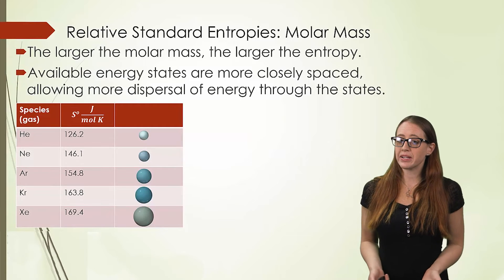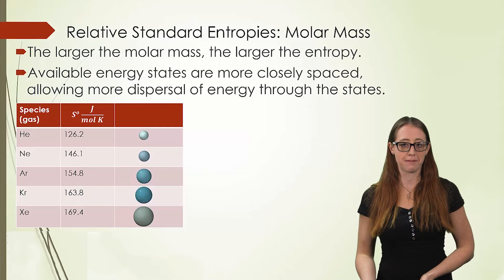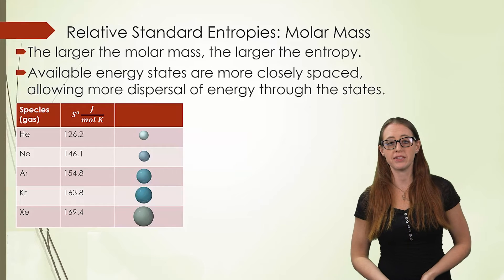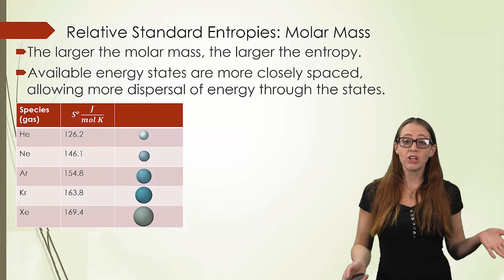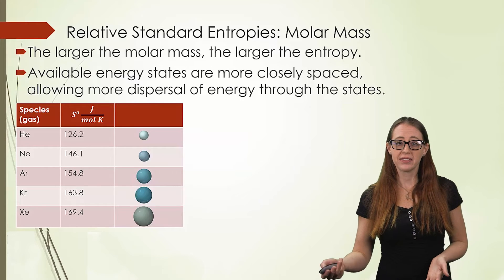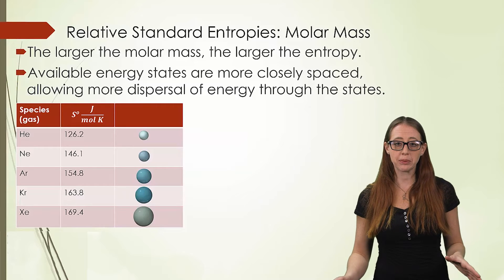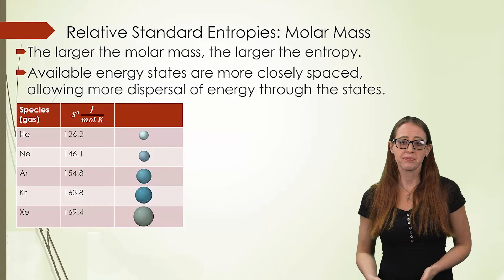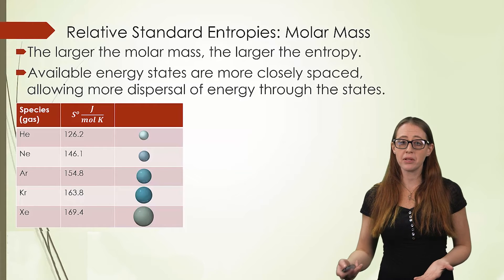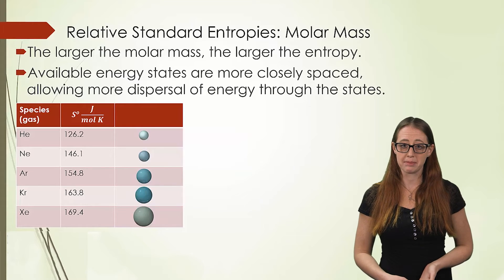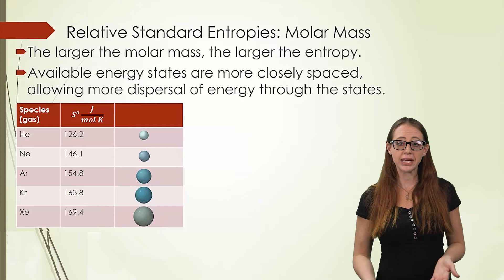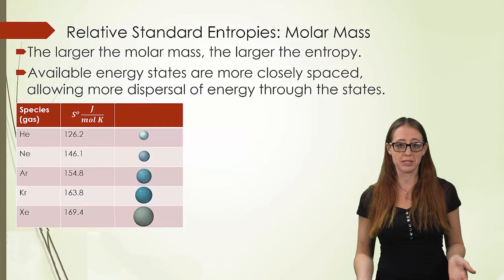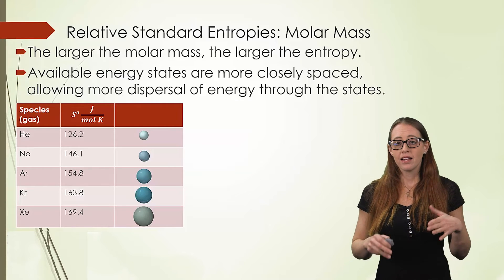The next comparisons aren't quite as intuitive as the phases, but they aren't too complicated, so you'll be alright. The larger the molar mass of a species, the higher its entropy. That's pretty easy to remember. The formal explanation for this is that the available energy states are more closely spaced. Therefore, you can get more randomness throughout the possible states.